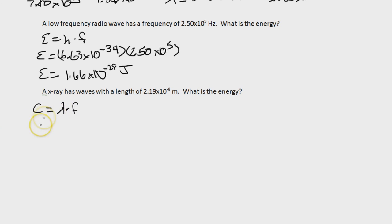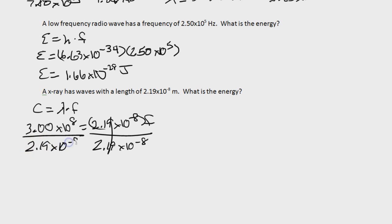So let's plug in the numbers that we've got. C is 3.00 times 10 to the 8th power. Wavelength here is 2.19 times 10 to the negative 8th power. And frequency is the unknown. So now we're going to divide both sides by 2.19 times 10 to the negative 8th. Cross that out. Do the same thing here. 2.19 times 10 to the negative 8th. And we get that frequency is 1.37 times 10 to the 16th power. And frequency is measured in hertz.